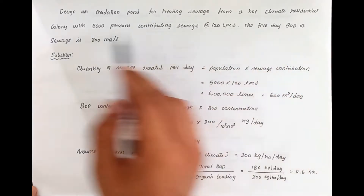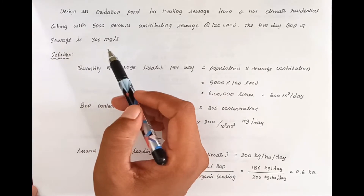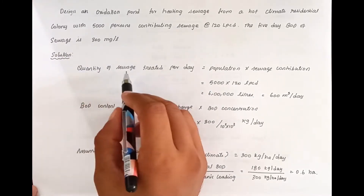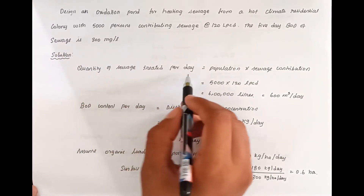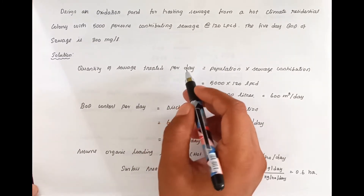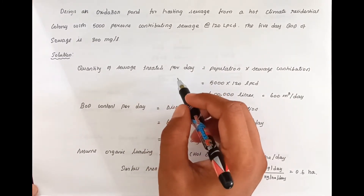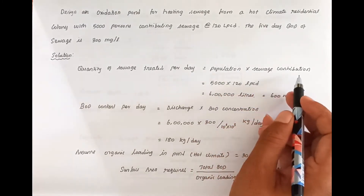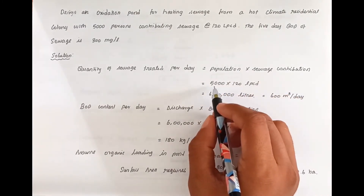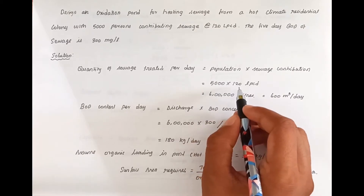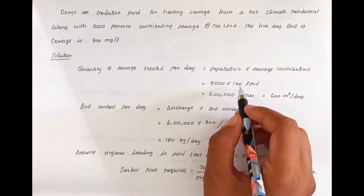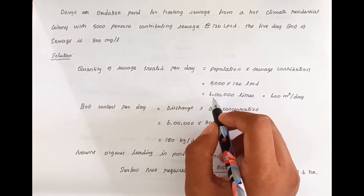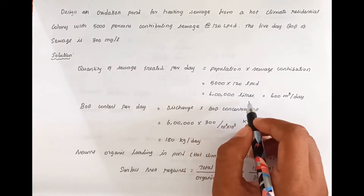The 5-day BOD of sewage is 300 mg per liter. First, we have to find out the quantity of sewage treated per day. The formula is population multiplied by sewage contribution: 5000 persons into 120 Lpcd gives us 6 lakh liters per day.